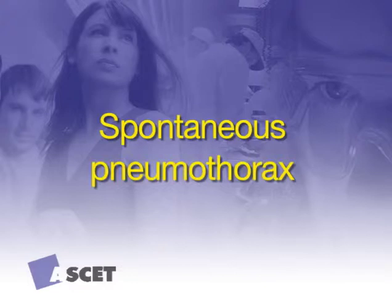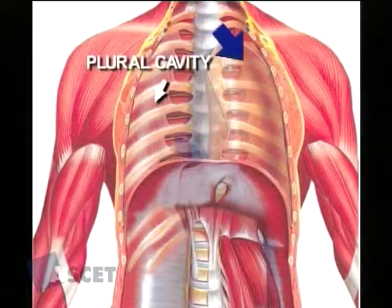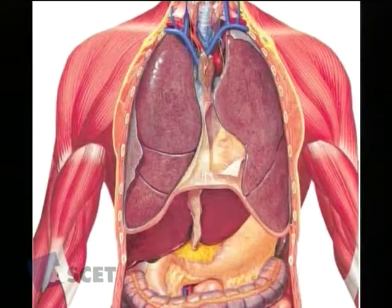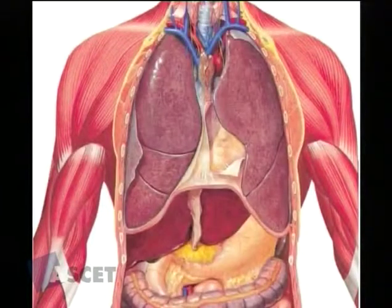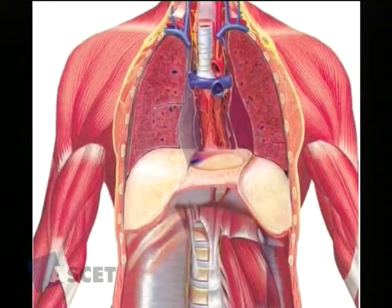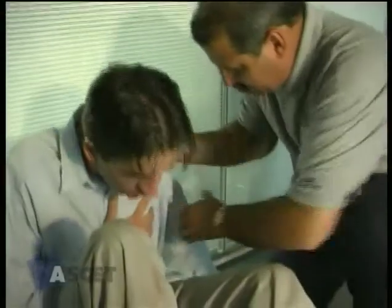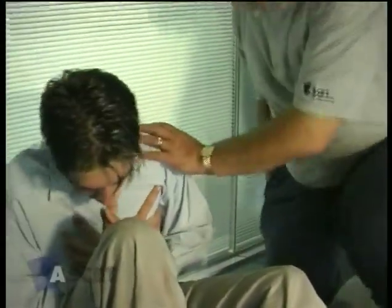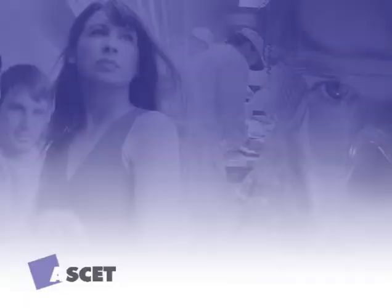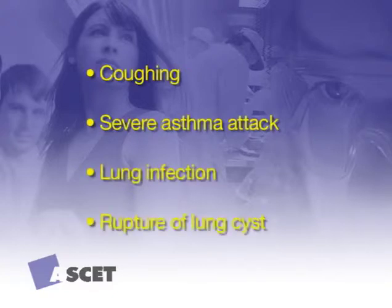Spontaneous pneumothorax. A pneumothorax occurs when air enters the pleural cavity — the space between the lungs and the chest wall. Normally this space is kept at a balanced pressure, ensuring that air is pulled into the lungs when the chest wall expands and the diaphragm descends. A spontaneous pneumothorax can occur when there is an internal rupture of lung tissue, following a violent bout of coughing, severe asthma attack, serious lung infection, or a rupture of a cyst on the surface of the lung.